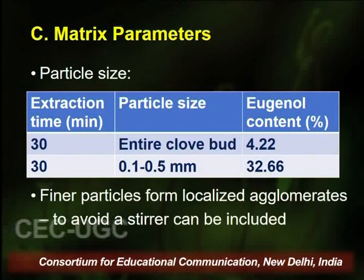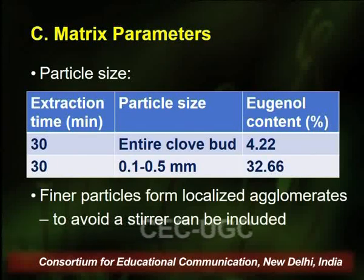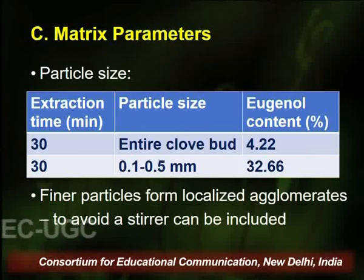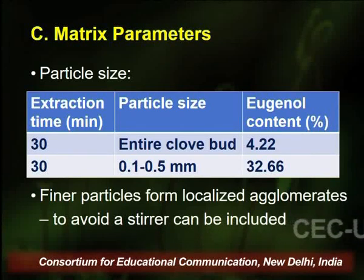The third category is matrix parameters. The effect of particle size on extraction efficiency is demonstrated using clove bud: one batch used entire clove buds, the second used powdered clove buds. There was a significant increase in eugenol content from powdered clove buds — smaller particle size means greater surface area, more contact with solvent, and better extraction. However, very fine particles can form agglomerates away from the transducers, reducing overall extraction efficiency.